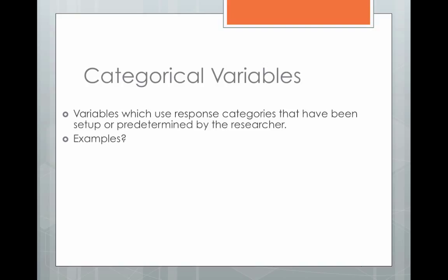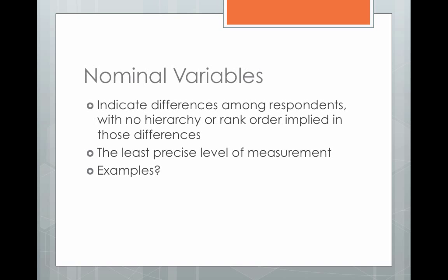Within this broad type of level of measurement, we have two types of categorical variables. The first are what we call nominal variables. Nominal variables indicate differences among respondents, but there's no hierarchy or rank order implied in those differences. There's no natural or inherent order to those categories — they could be written in any order and they would make just as much sense. This is the least precise level of measurement, meaning there aren't as many statistics you can do with it.